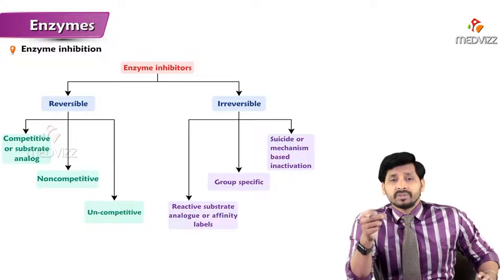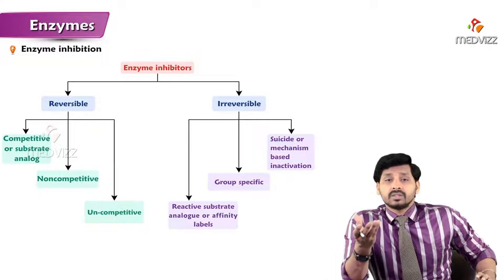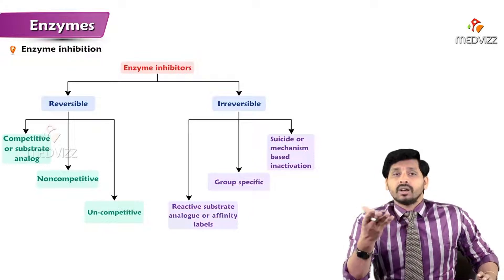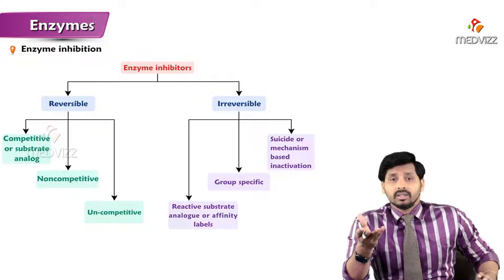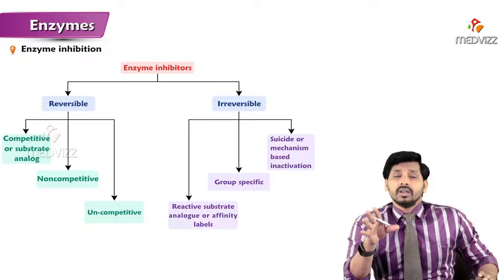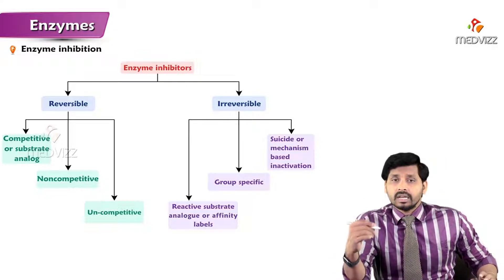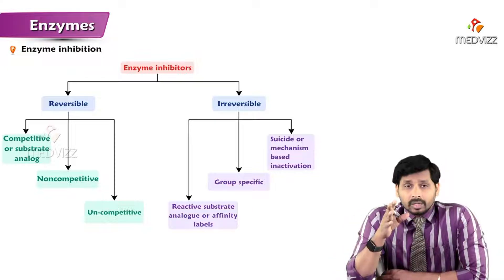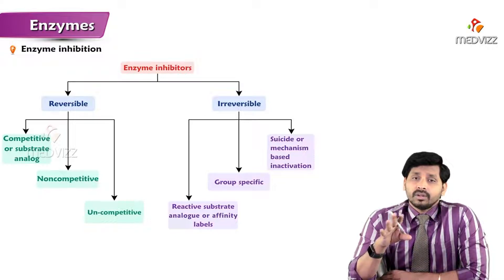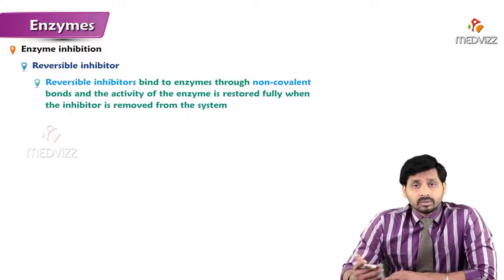In irreversible inhibition, there are categories like reactive substrate analogs — where the reaction involves a similarly structured substrate — and group-specific inhibitors, which bind to specific groups of enzymes. There are also suicide inhibitors, also called mechanism-based inhibitors. Once this type of inhibitor binds, there is no further proceeding of the reaction — it is like the enzyme committing suicide, rendering it permanently inactive.